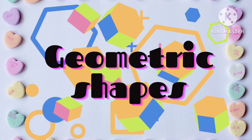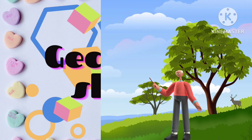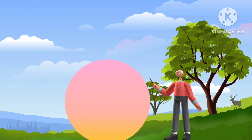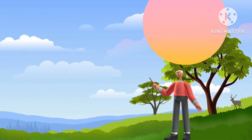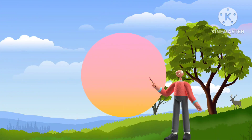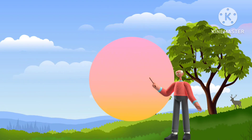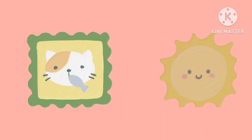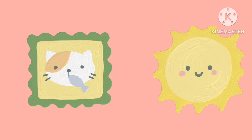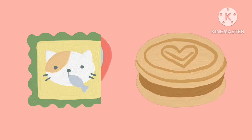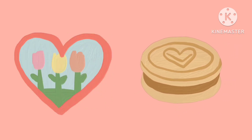Hey friends, welcome to my channel Shining Stars. Today we are going to learn about metric shapes. I'm a circle. A circle is round and round. A sun is a circle, this cookie is a circle.